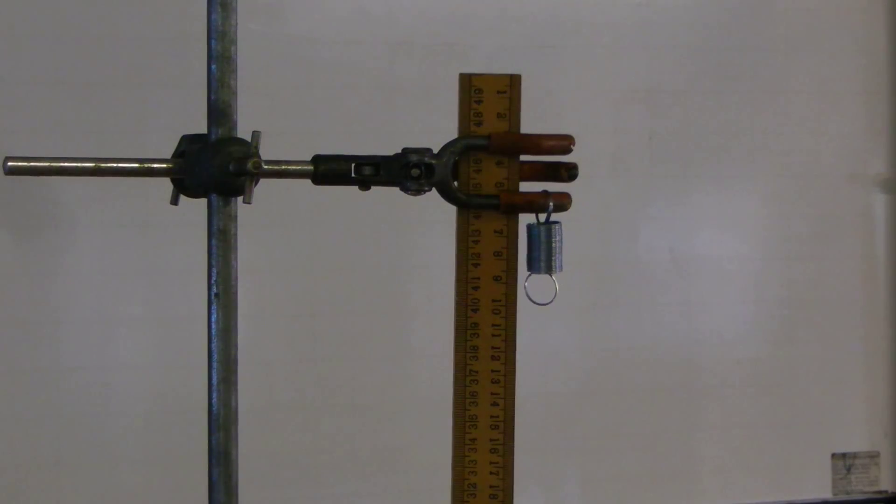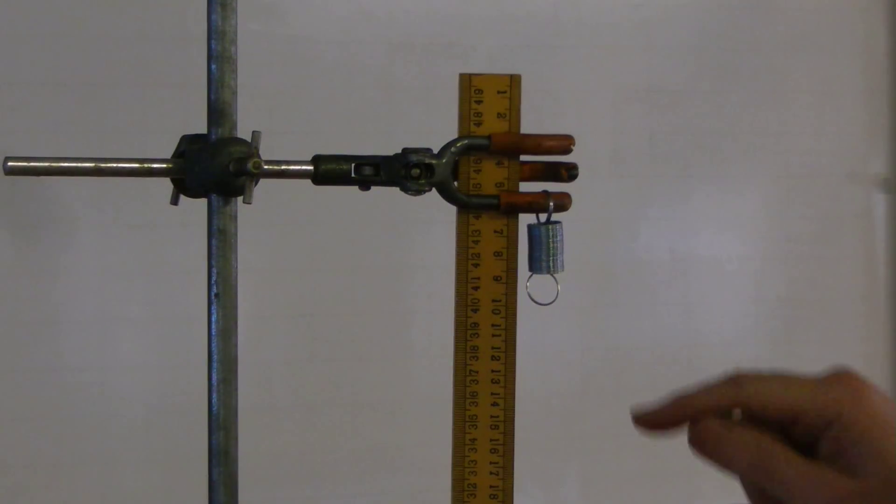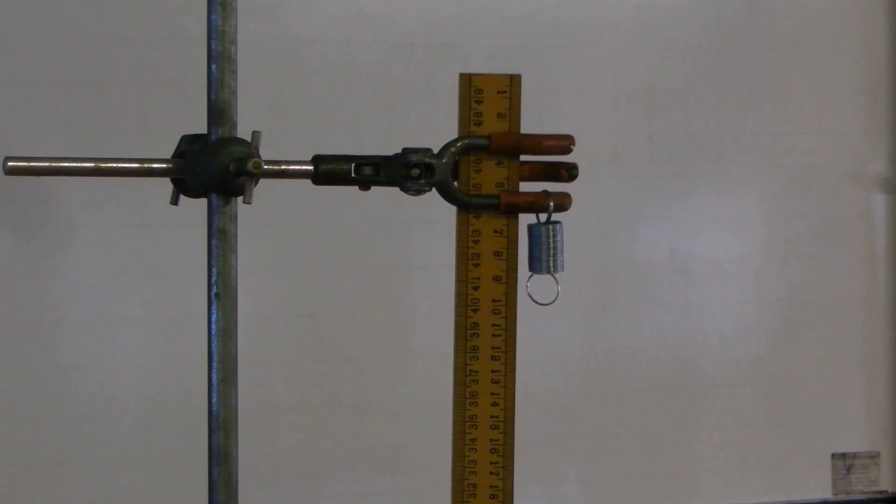This is useful because you're going to be working out the extension of the spring rather than the actual position of it. So, we need to know the initial position because we're going to take away that number 10 from all our subsequent readings.